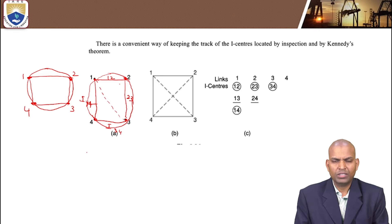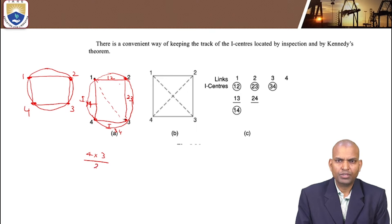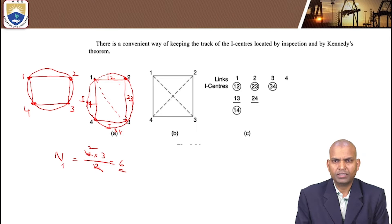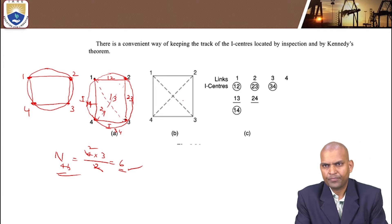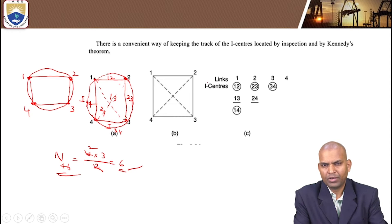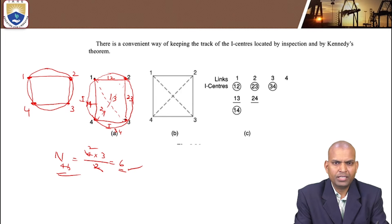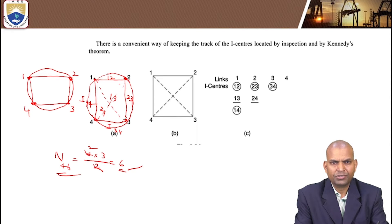For a 4-link mechanism, the number of iCenters is 4 times (4 minus 1) divided by 2, which equals 6. So the 4-bar mechanism has 6 iCenters. We have already identified 4 directly: i12, i23, i34, and i14. The remaining two are i13 and i24. Some of these iCenters — the fixed and permanent ones — can be visualized or inspected directly, while others cannot be located directly and must be found using Arnold-Kennedy's theorem.